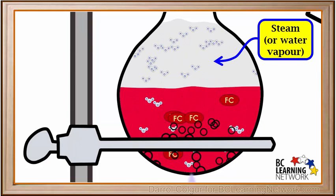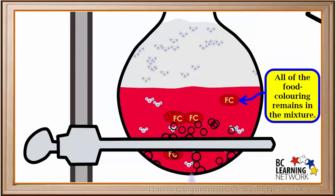So above the mixture, we have steam, which only contains water molecules, so it is pure water vapor. All of the food coloring molecules remain in the red mixture below the steam, so we are beginning to separate the water from the solution.